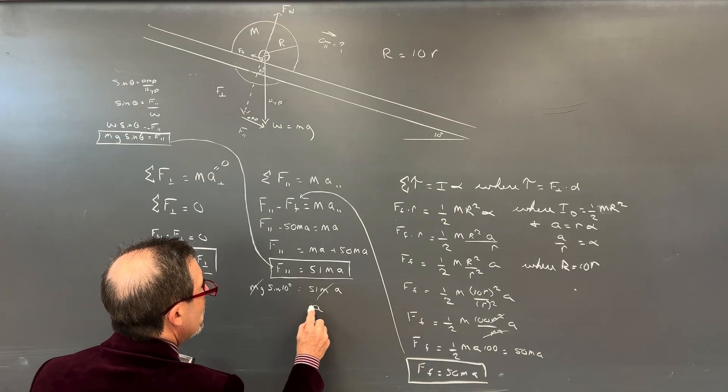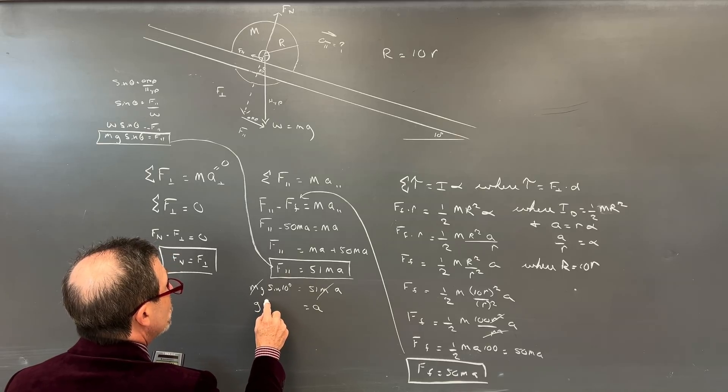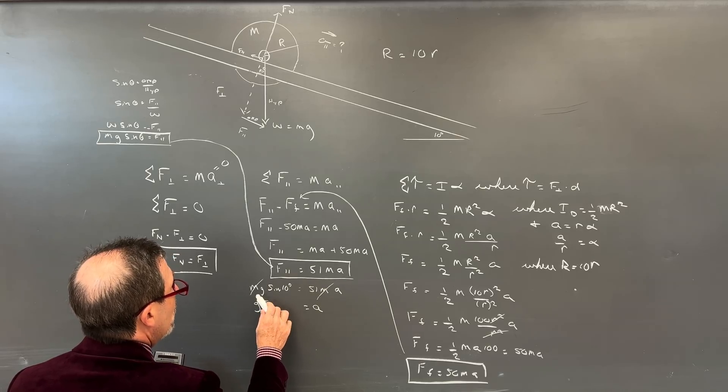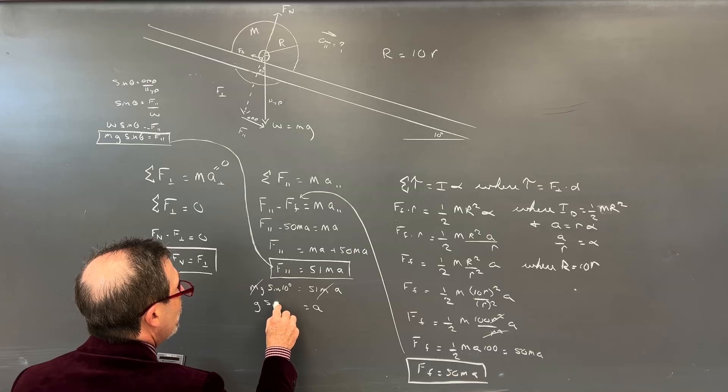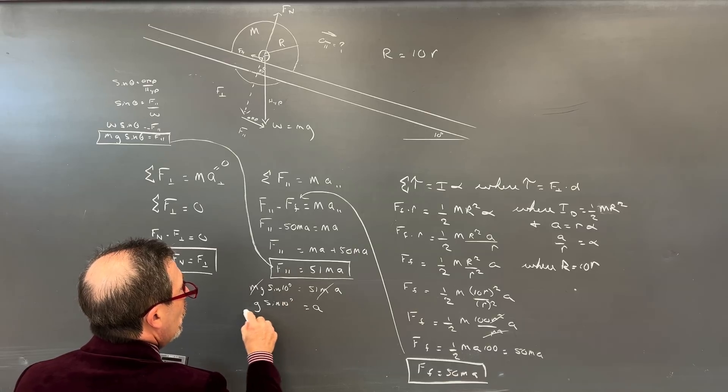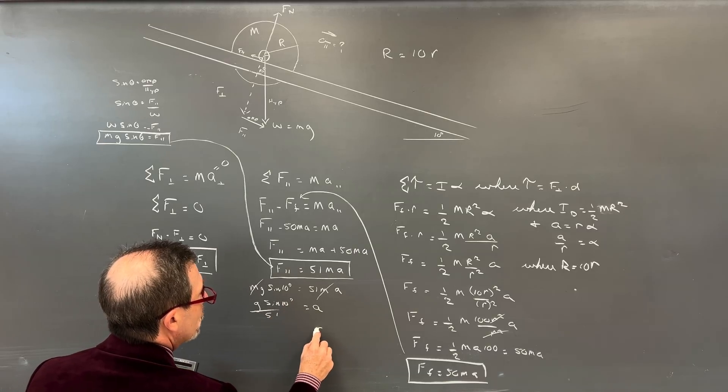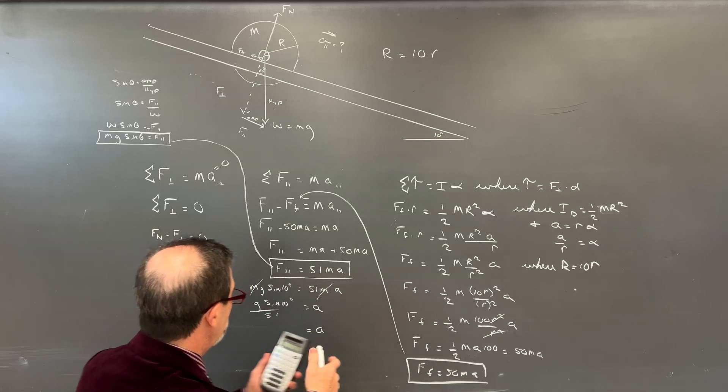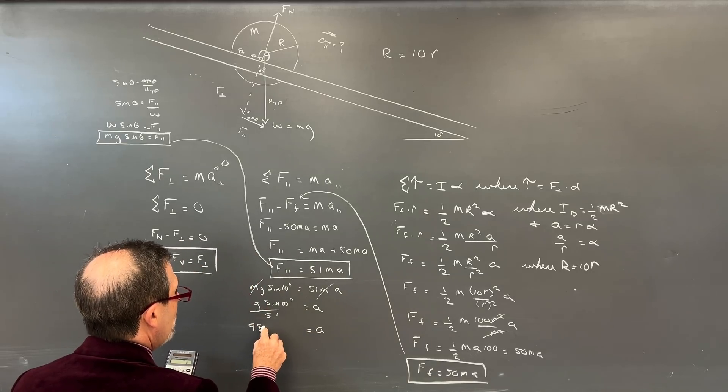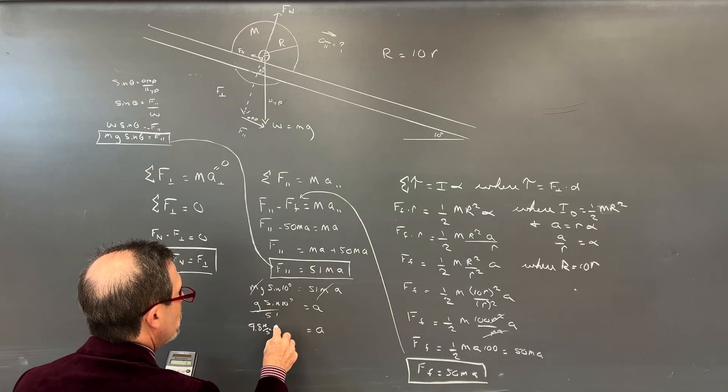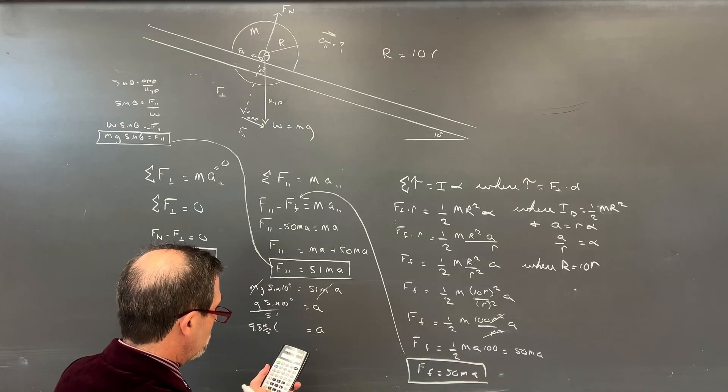Take this over to the other side. Force parallel equals, and that would be Ma plus 50 Ma. Force parallel equals 51 Ma. So now that I have my 51, so look, this is going to be acting like it's a huge mass that you're trying to accelerate down here.